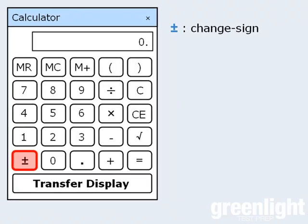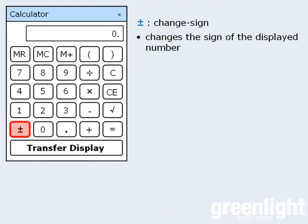This next one is called the change sign button. It changes the sign of whatever number happens to be in the display window at that time. So if there's a 3 in the display and you click the change sign button, the 3 will turn into negative 3. Conversely, if there's a negative 6 in the display window and you click the change sign button, the negative 6 will turn into positive 6.